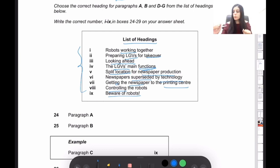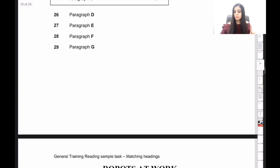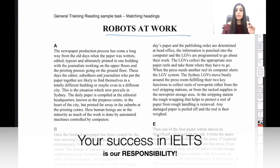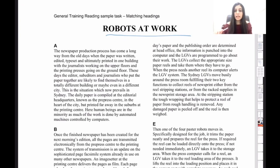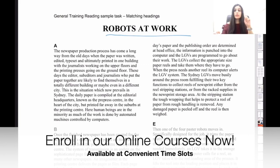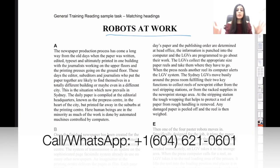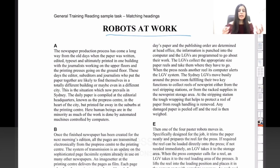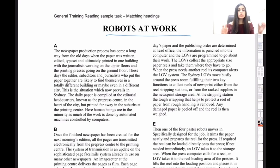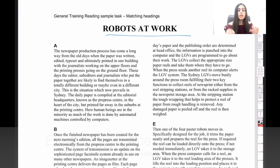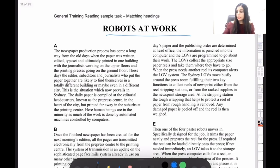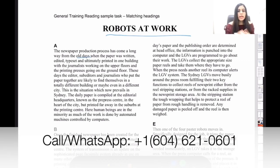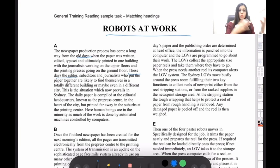Moving to paragraph A: 'The newspaper production process has come a long way from the old days when the newspaper was written, edited, typeset, and ultimately printed in one building — with journalists on the upper floors and the printing press on the ground floor.' Now sub-editors and journalists are likely to find themselves in totally different buildings, maybe even different cities. In Sydney, the daily newspaper is compiled at the editorial headquarters — known as the pre-press center — in the heart of the city, but printed far away in the suburbs. Much of the work is done by automated machines controlled by computers.